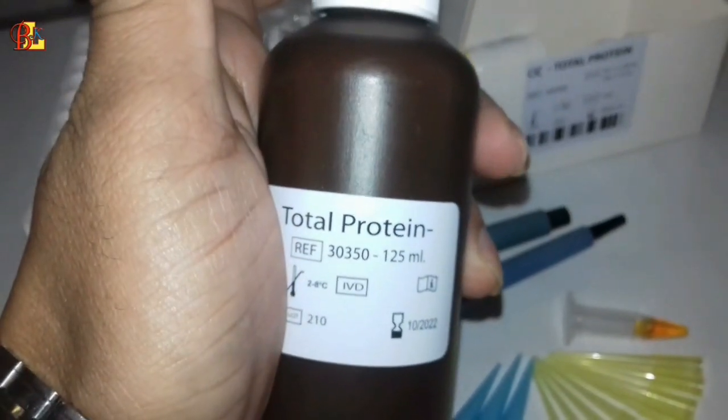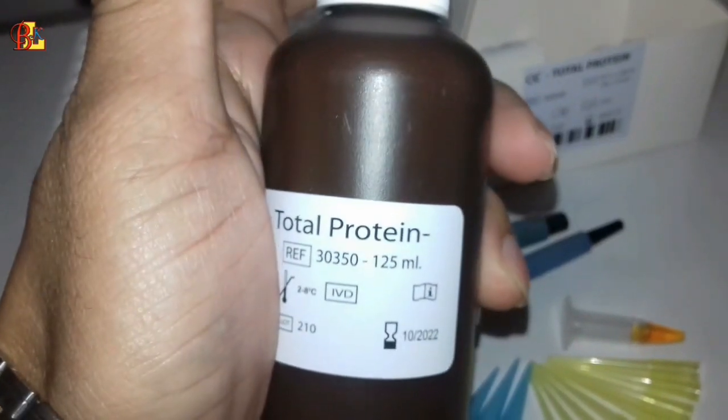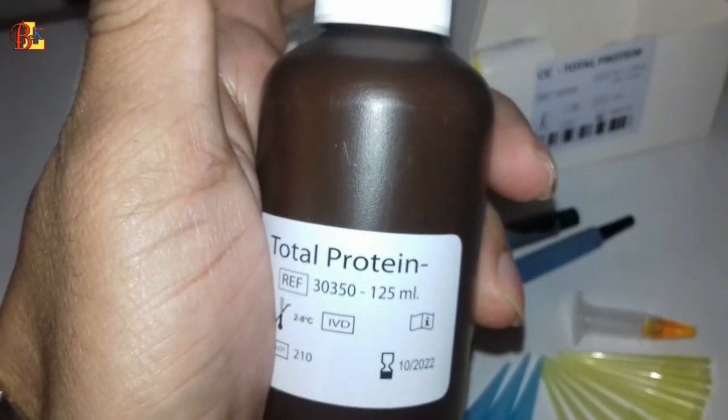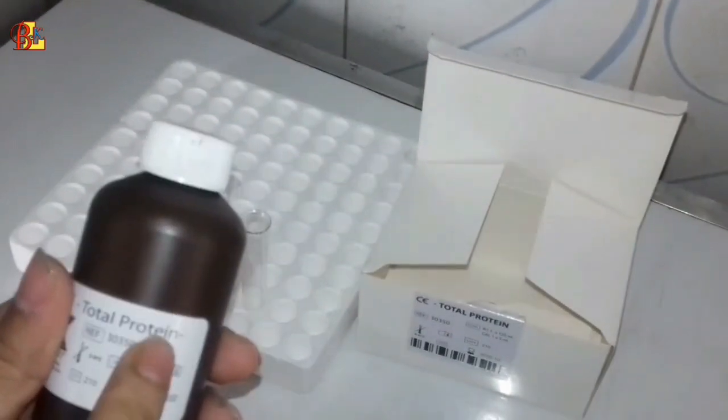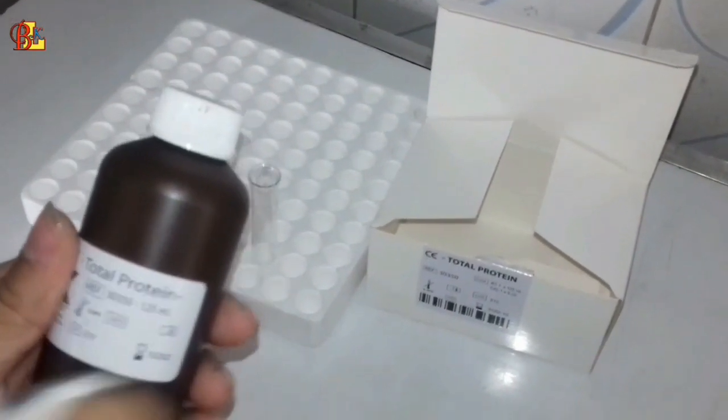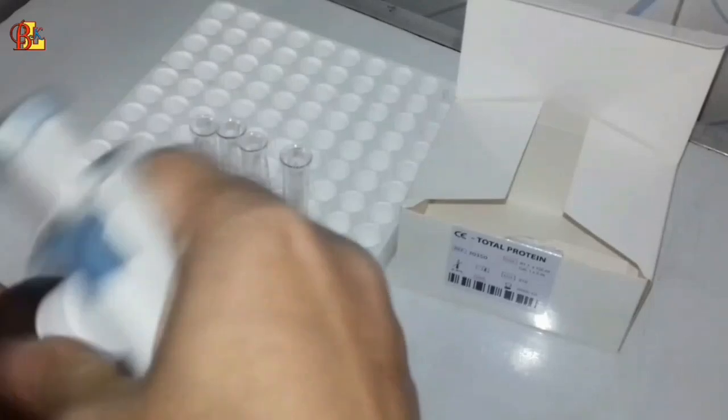With the reagent, we will do the total protein test. The first thing we will use is the test tube, and then we need micropipette tips and reagent.